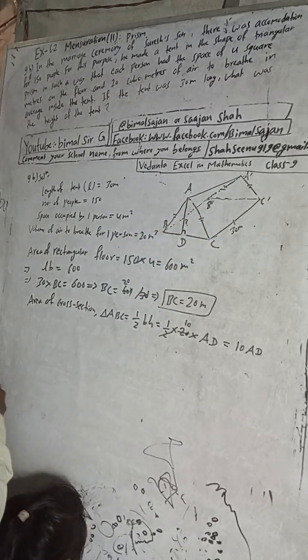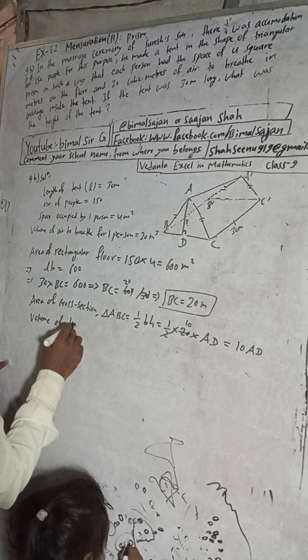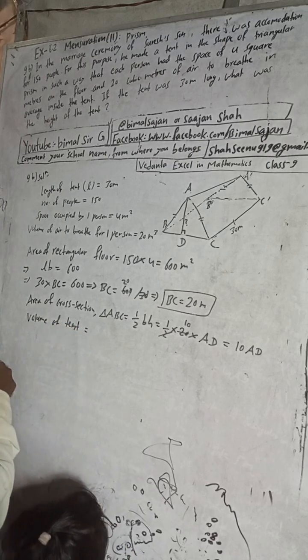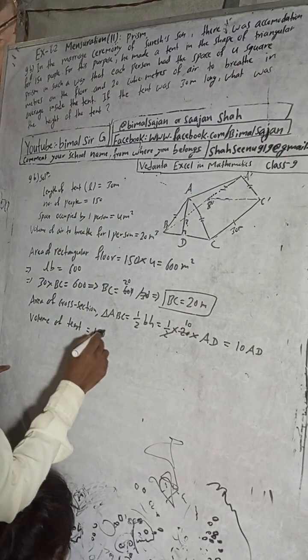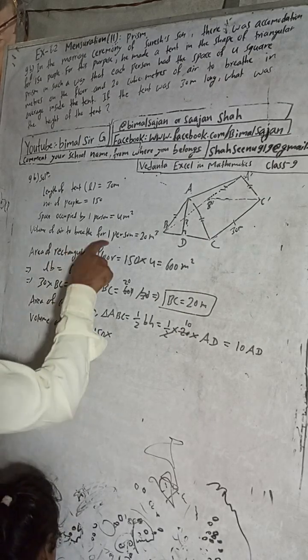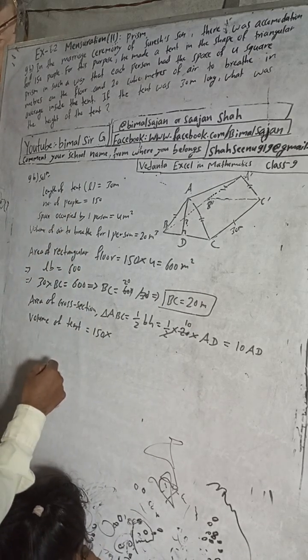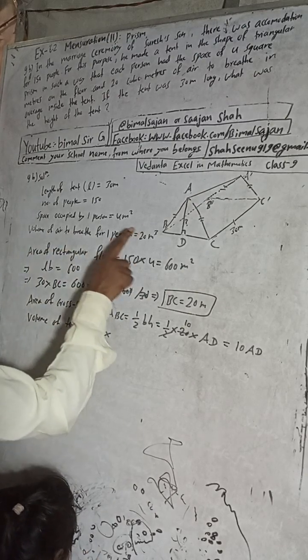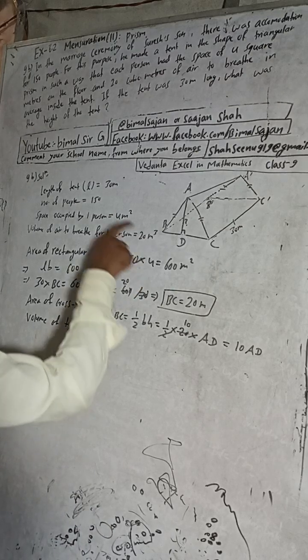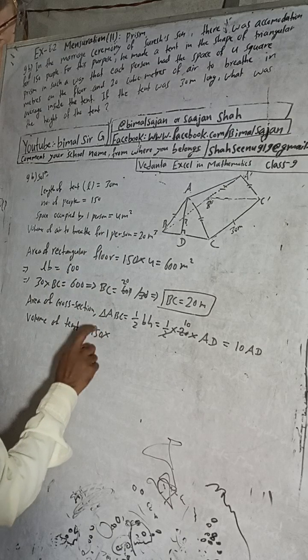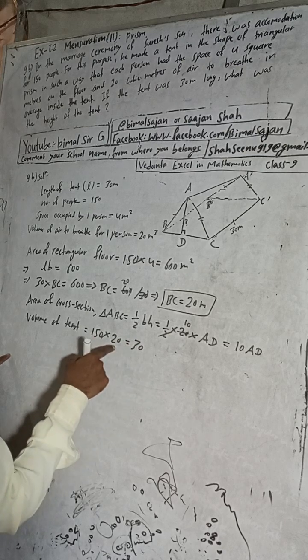BC is 20, so put here 20 into height. Our height is what? This is suppose this is D, then AD height is AD. This is half of 20, this is 10, that means 10 AD. We got area of cross section, we got. Now we find the volume of tent.